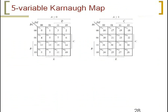This is our 5-variable map. Five variables give 32 combinations, so we will get 32 min terms. Min terms M0 to M15 occupy one 4-variable map, and M16 to M31 occupy another 4-variable map. We represent this 5-variable K-map using two 4-variable maps. Throughout the first map the value of A is 0, with BC on one side and DE on the other; throughout the second map the value of A is 1.